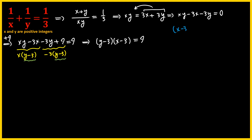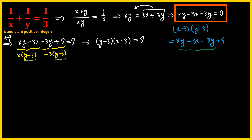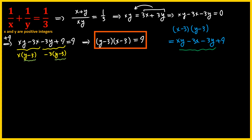When we expand (x minus 3)(y minus 3), we get xy minus 3x minus 3y plus 9. We had that expression on the left-hand side, so I added 9 to complete it — that was the reason I added 9 to both sides. Since x and y are positive integers, x minus 3 and y minus 3 are also integers, meaning they must be integer factor pairs of 9.